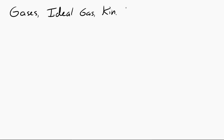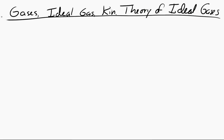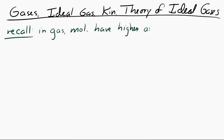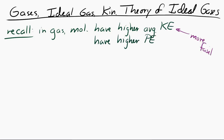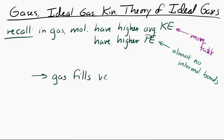Let's take a look at gases, ideal gases, and the kinetic theory of ideal gases. Remember back to when we looked at the gas phase. The molecules, on average, have higher kinetic energies and high potential energies. So in other words, they're moving around very fast and they have almost no interactions, almost no intermolecular bonds between them. And from a macroscopic point of view, a gas will fill the volume of whatever container it is inside.